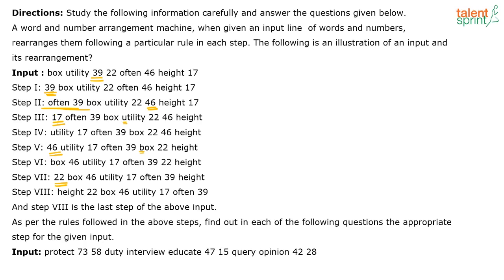To summarize: first, odd numbers are arranged in decreasing order — highest odd number first, then next highest, and so on. Then the highest even number, then next highest even, and so on. For words, they first arrange words starting with vowels in alphabetical order — 'often' first, then 'utility.' Then words starting with consonants are arranged in alphabetical order: 'box,' 'height.' That is the pattern followed.